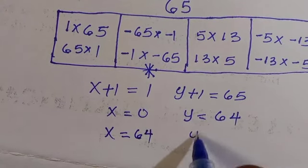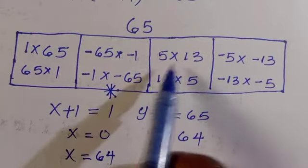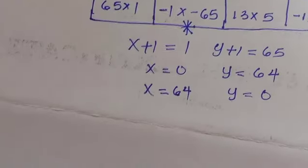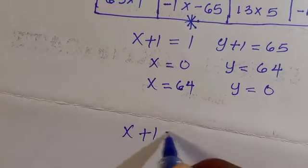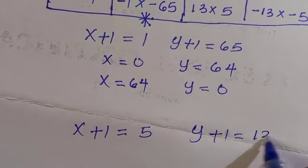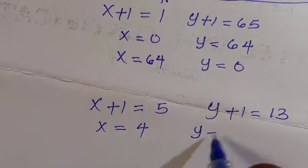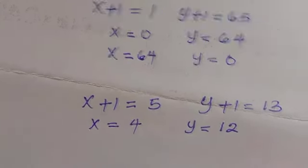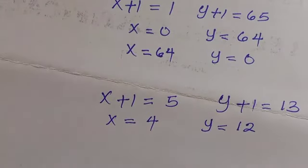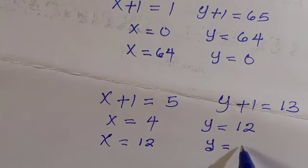For the factor pair 5 times 13: x plus 1 equals 5 and y plus 1 equals 13, giving x equals 4 and y equals 12. For the reverse, 13 times 5: x plus 1 equals 13 and y plus 1 equals 5, giving x equals 12 and y equals 4.